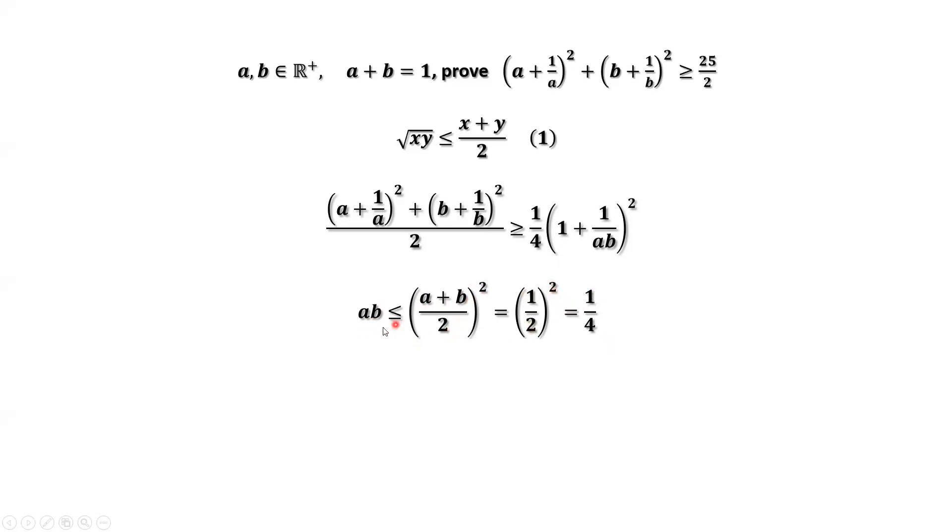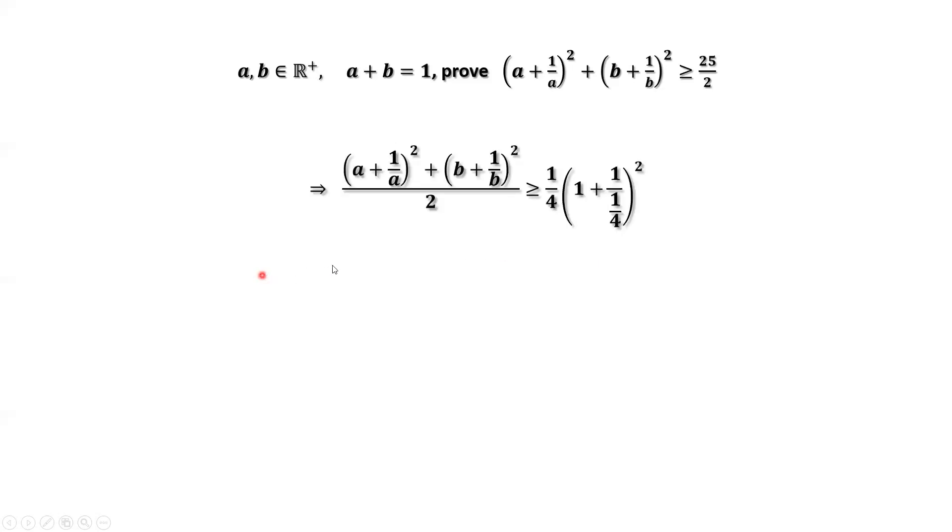This means ab ≤ 1/4. We replace 1/4 in this denominator. The inequality is greater than or equal to... 1 over 1/4, which is 4. 1 plus 4 is 5. 5 squared is 25. 25 over 2. This is the result.